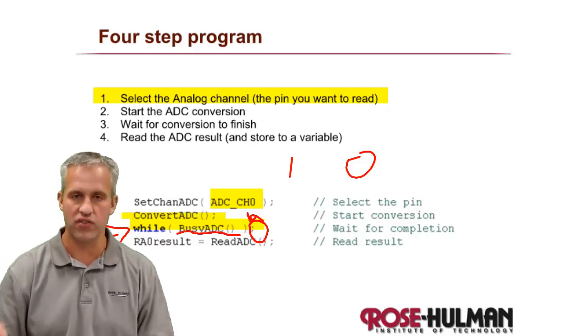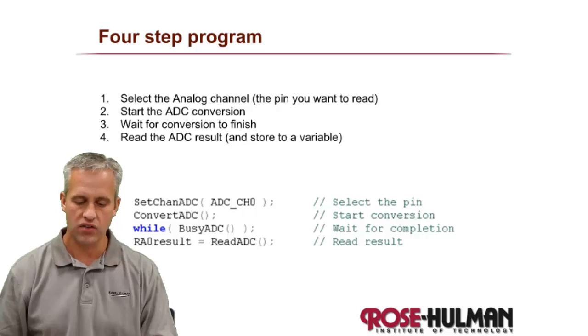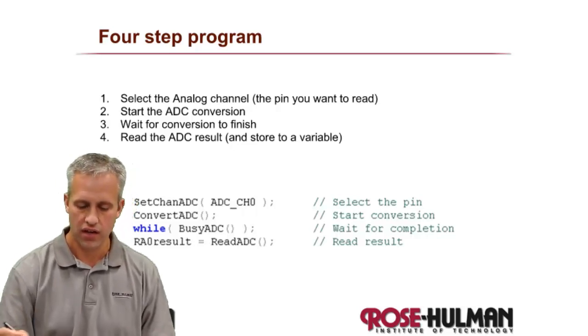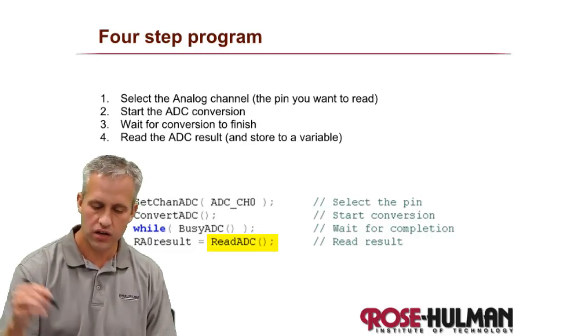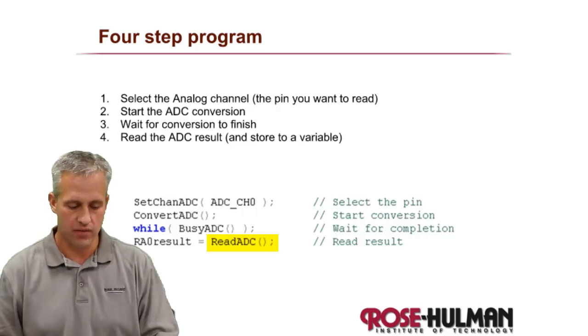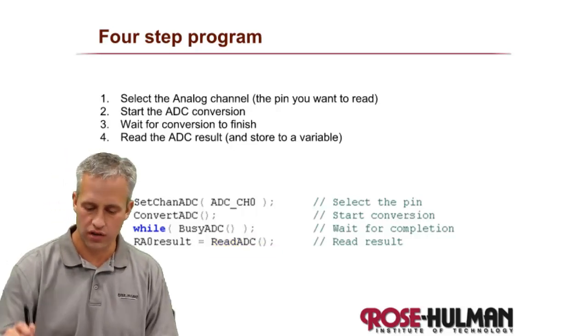It's the same thing, just different syntax. We put that on there to say do nothing in the while loop. Then as soon as we're done we just read the result: read ADC. That's it. It's always these four lines.